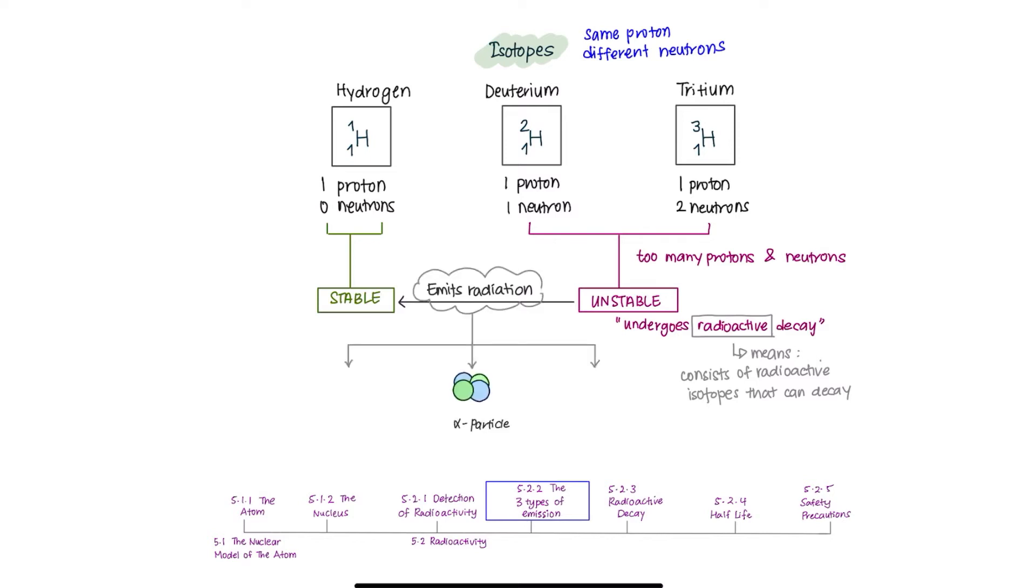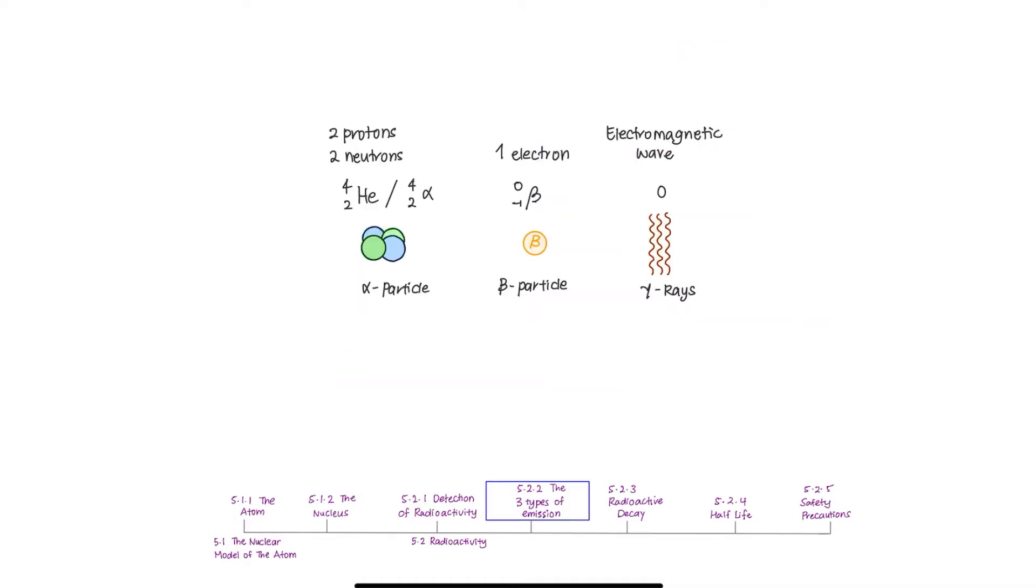Such as alpha particles, beta particles, or gamma radiation. We are going to talk about three parts: their ionizing effect, how penetrating each of them are, and how they deflect in a magnetic and electric field.